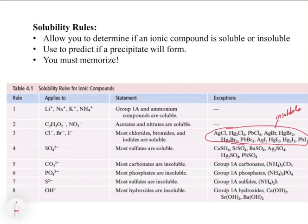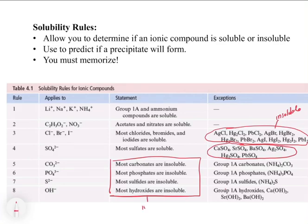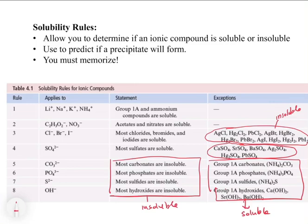And the same goes for sulfate — everything else is soluble except for that set. And then the carbonate, phosphate, sulfate, and hydroxide — these ones are all insoluble. So really what you have to do is memorize these. You have to go through and memorize the table. And once you have the table memorized, you can predict a precipitation reaction very easily because you'll know what's going to be soluble versus insoluble.